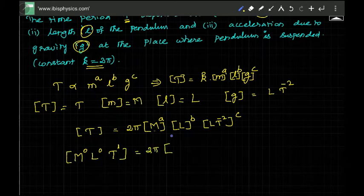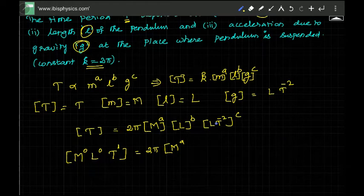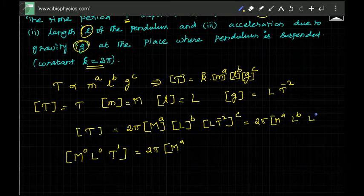2π into M power a and L power b. LT^-2, so that means 2π into M^a and L^b, where LT^-2 means L^c T^-2c.